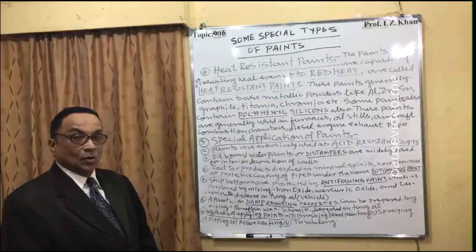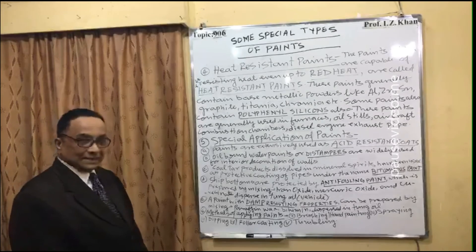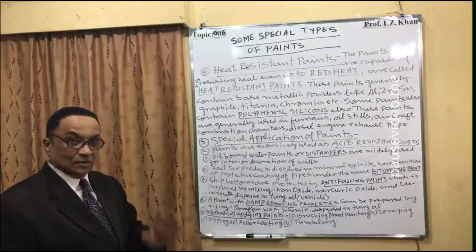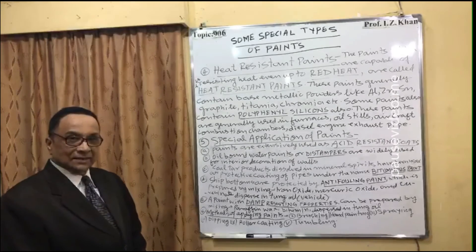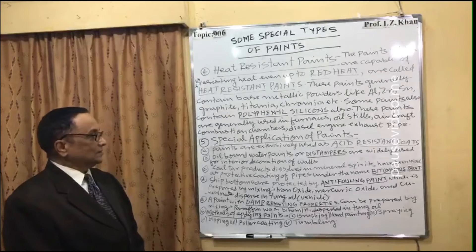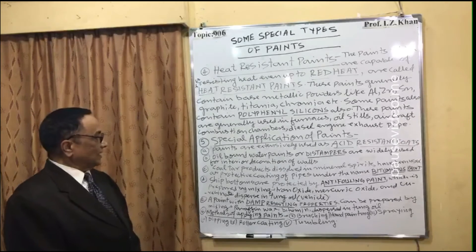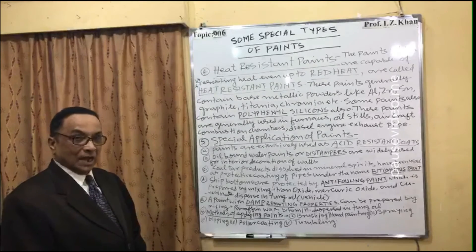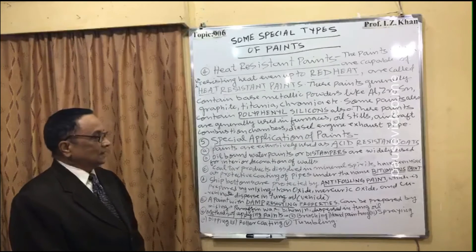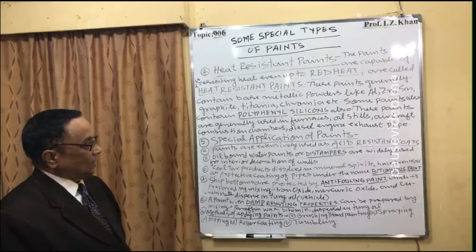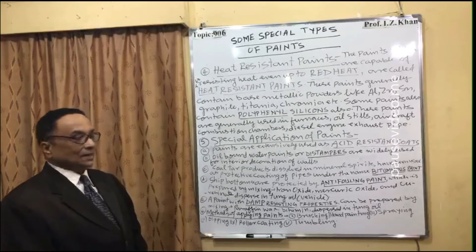There are also special applications of paints. First, paints are extensively used as acid-resistant coatings. Second, oil-bound water paints, commonly called distempers, are widely used for interior decoration of walls and houses. Third, coal-tar products dissolved in mineral spirits have been used as protective coating for pipes, known as bituminous paint.